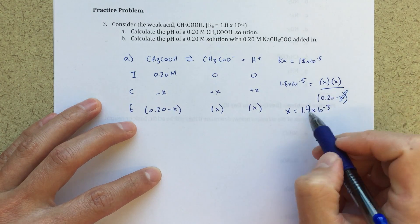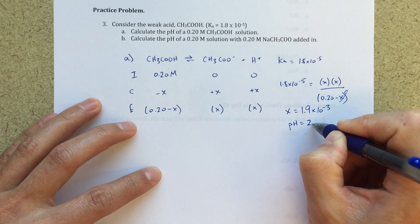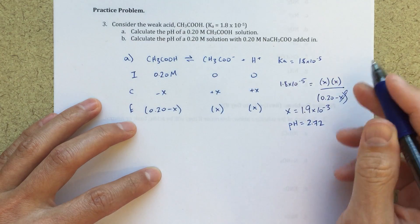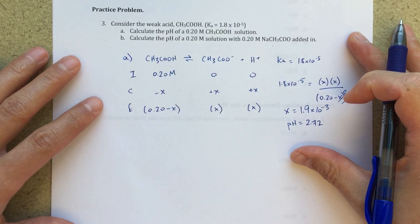Indeed, it is very small. That's my concentration of H plus. So I can solve for my pH. That equals 2.72. So this first part, this is really just a simple weak acid type problem, should be something that you're getting very familiar with since we've done this quite a bit now.